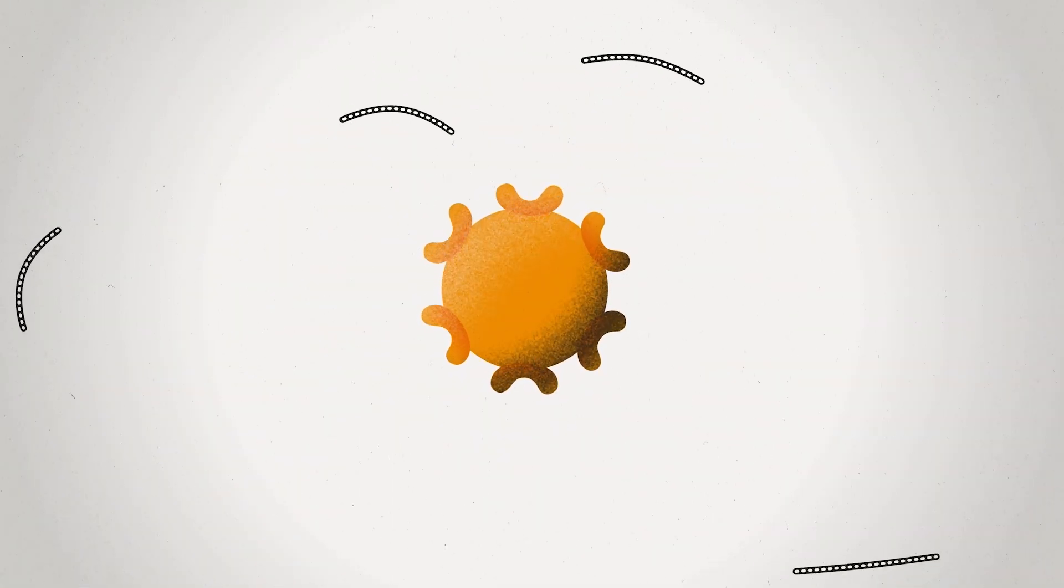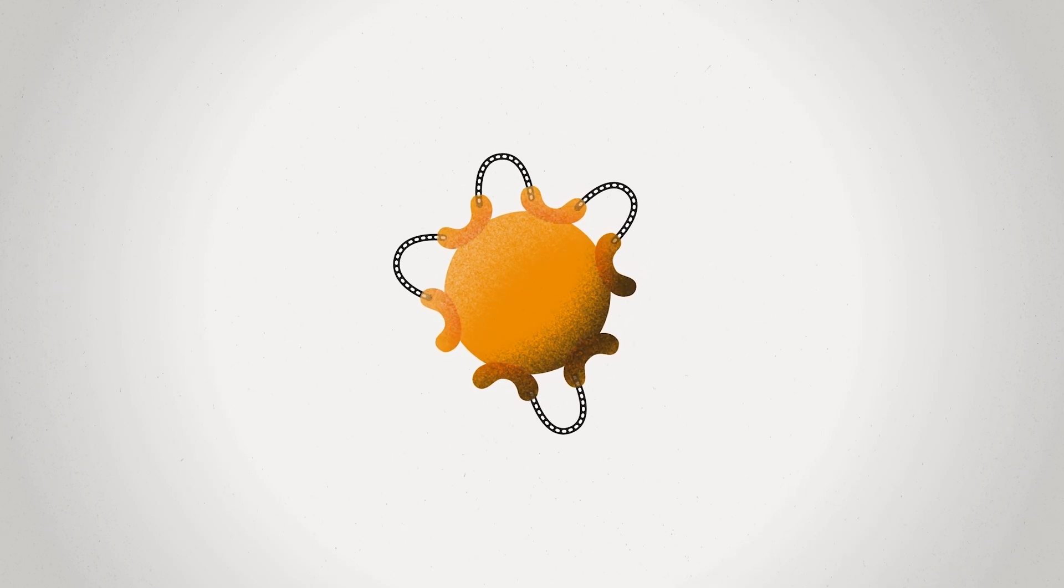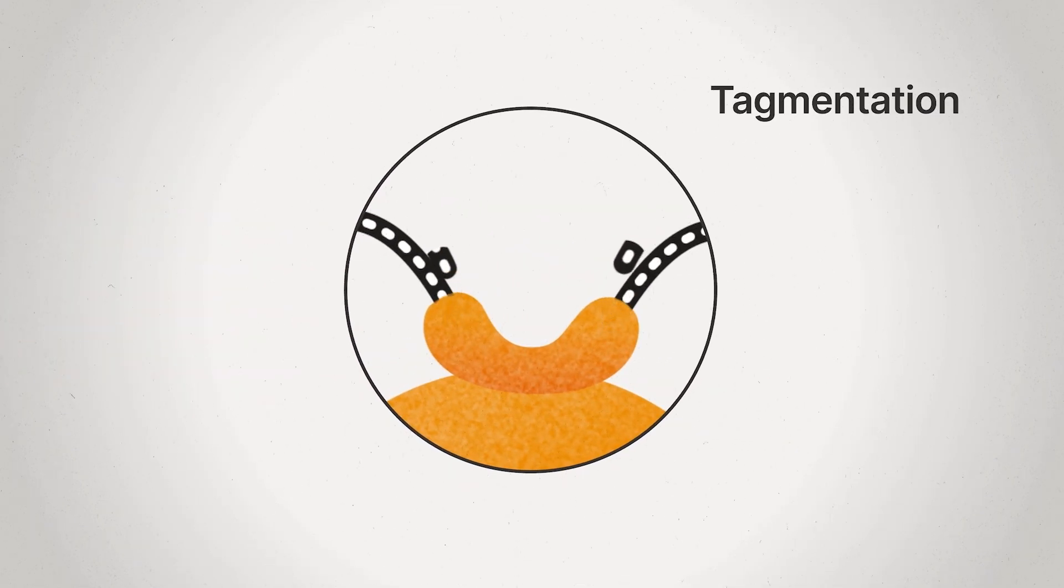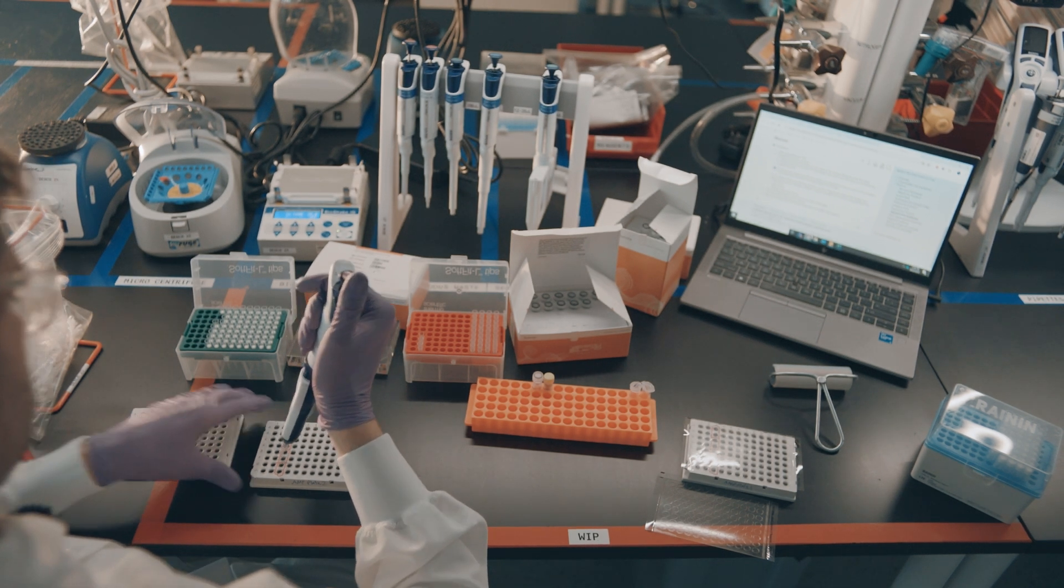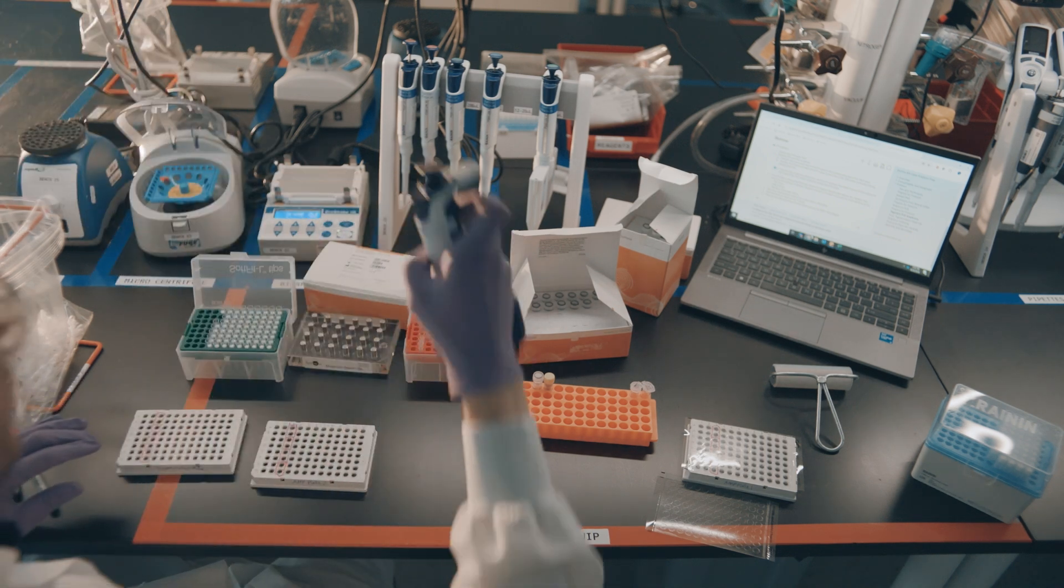After amplicon PCR, samples are recombined into the same well and then amplicons are tagmented. This adds adapter sequences, which are used to later add indexes. During the wash steps, the users should be careful to avoid splashing between wells, as this step has a higher risk of contamination if not careful.